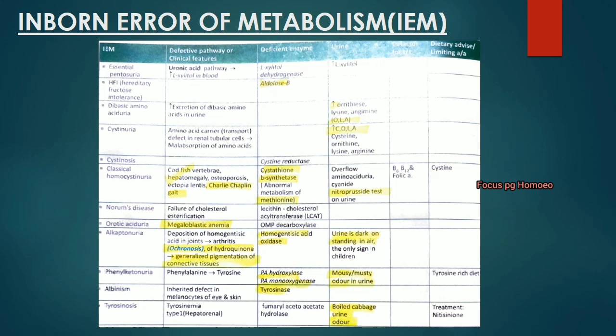Orotic aciduria: deficient enzyme is OMP decarboxylase; patient presents with megaloblastic anemia. Alkaptonuria: deficiency of homogentisate oxidase; urine is dark on standing in air — the only sign in children. The patient presents with deposition of homogentisic acid in joints causing arthritis, and ochronosis — generalized pigmentation of connective tissue.